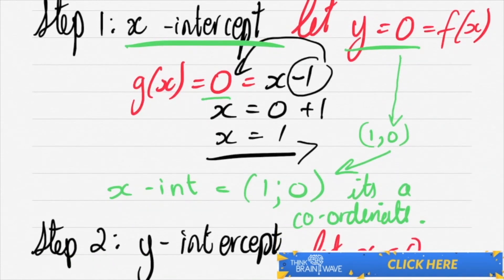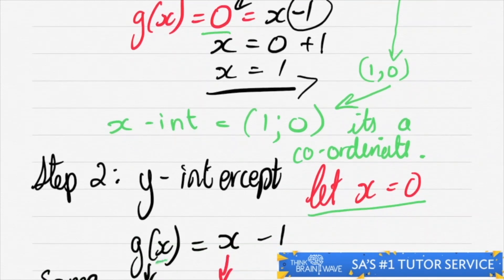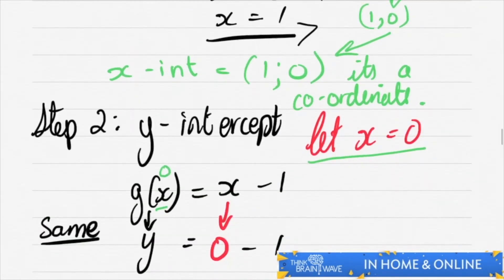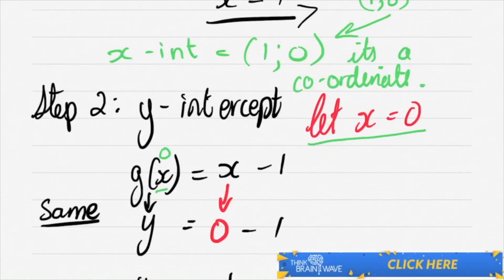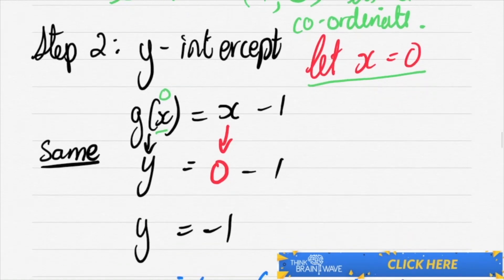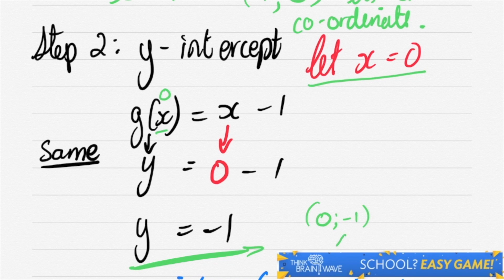Let's do our second step, the y-intercept. It's the same sort of process. Now instead, you just make x = 0. So here this will be equal to 0. You say y = 0 - 1, therefore y = -1. So your coordinates would be (0, -1) as shown below.